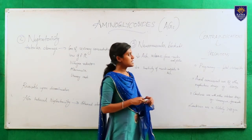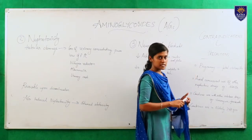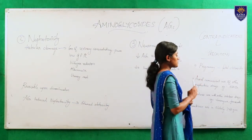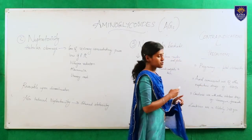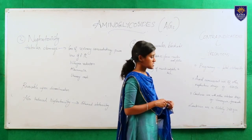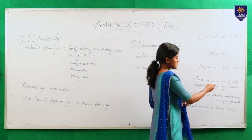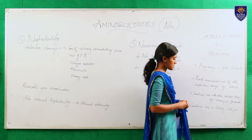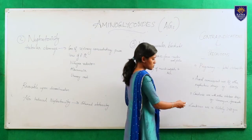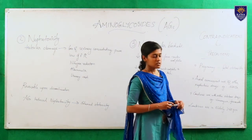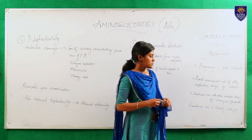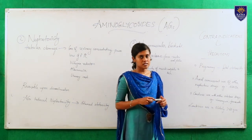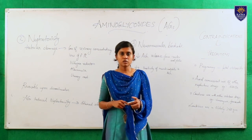Now we shall discuss contraindications and precautions. This drug is contraindicated in pregnancy as it may cause fetal ototoxicity, so we should avoid its use in pregnant women. We should also avoid concurrent use of other nephrotoxic drugs, which may have a synergistic toxic effect — for example NSAIDs, amphotericin, etc. There should also be cautious use with other ototoxic drugs such as vancomycin and furosemide. Cautious use is also needed in elderly patients aged 60 years and above, and in patients who already have kidney damage or hearing loss. Thank you.